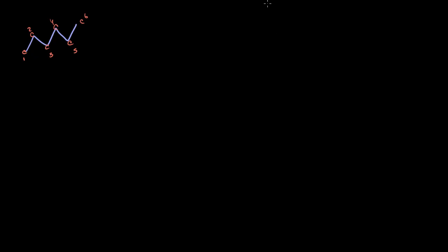Before I actually name it, let me give you all of the different prefixes. If you have 1 carbon, the prefix is meth. If you have 2 carbons, the prefix is eth. It's good to memorize at least up to about 10, and it kind of repeats after that. If you have 3 carbons, the prefix is prop — like propane. And you've heard of ethane and methane, so you'll see all of that soon.